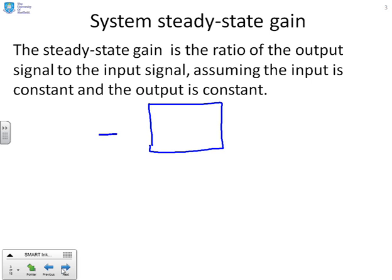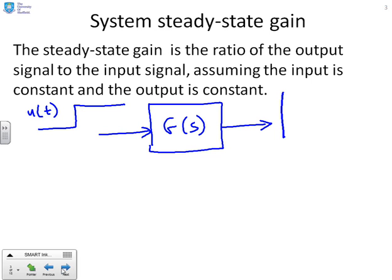Let's assume that coming into a block you've got an input signal U of T — essentially a step — that goes into a transfer function block G of S, and out of that comes Y. Eventually Y will get to a steady state value.